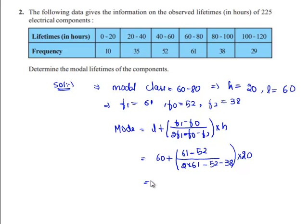Solving it we get 60 plus 61 minus 52 that is 9 by 2 into 61 that is 122 minus 52 plus 38 which is 90.